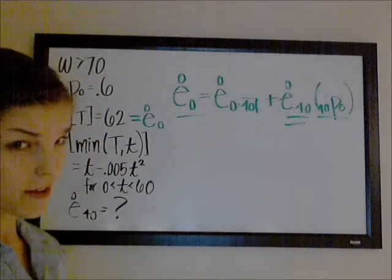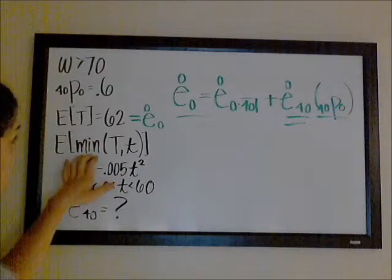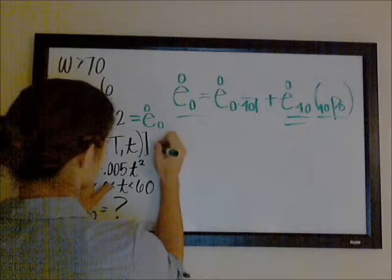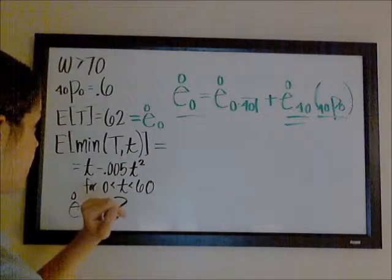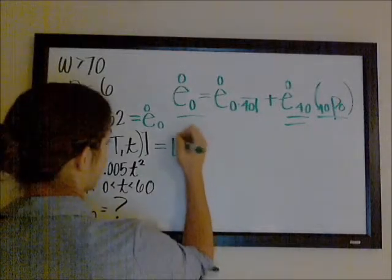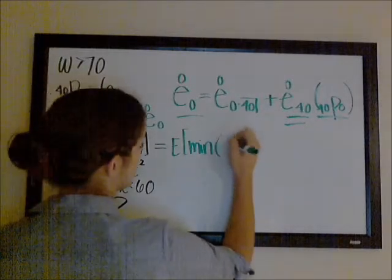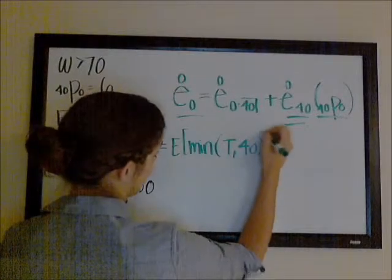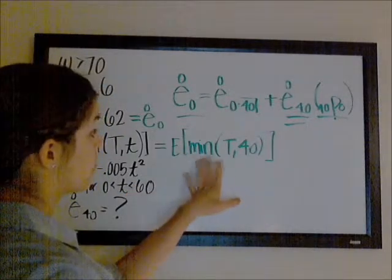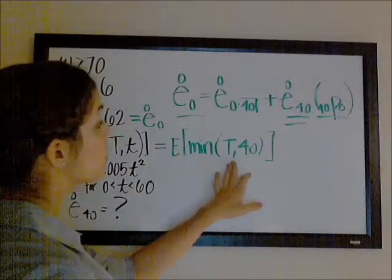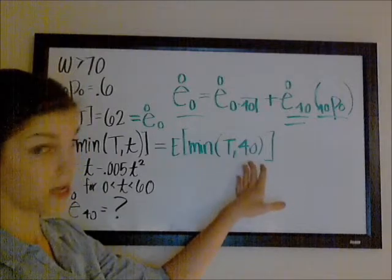So, the way I'm thinking about it now is, this is the expected value of the minimum of the future lifetime and some other value, T. So, let's say you write, for example, the expected value of the minimum of the future lifetime and 40. Well, we're going to be looking at the future lifetime only up to 40, because once the future lifetime gets past 40, 40 is the minimum.